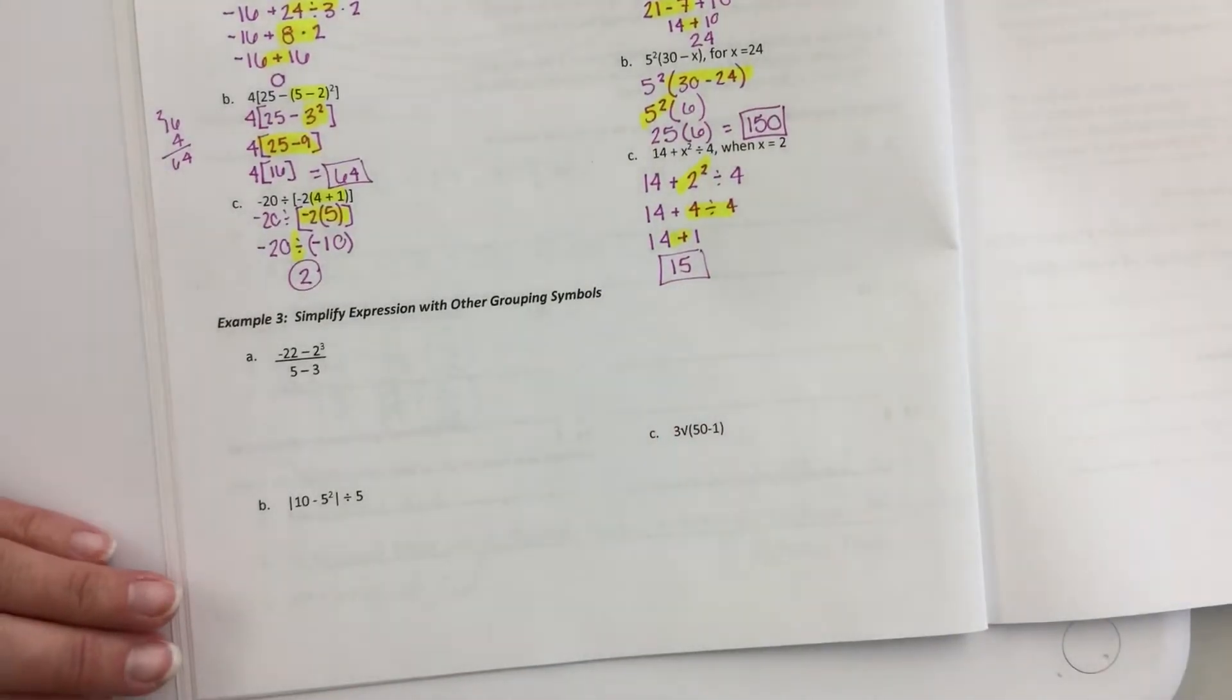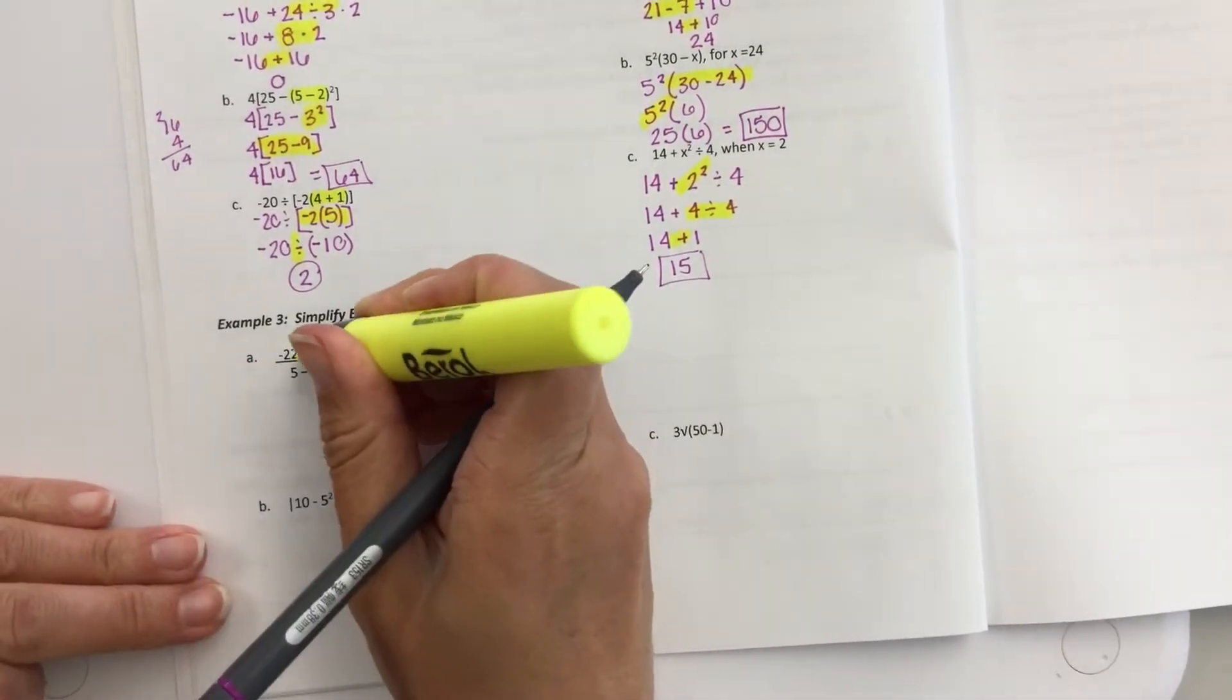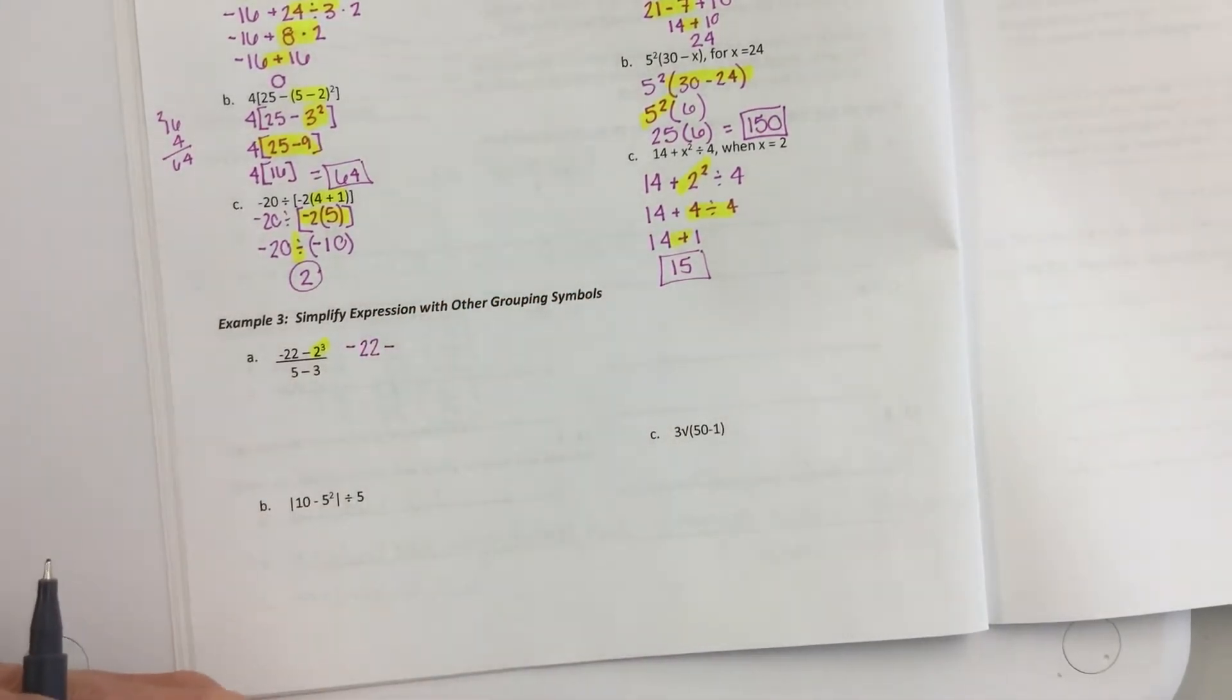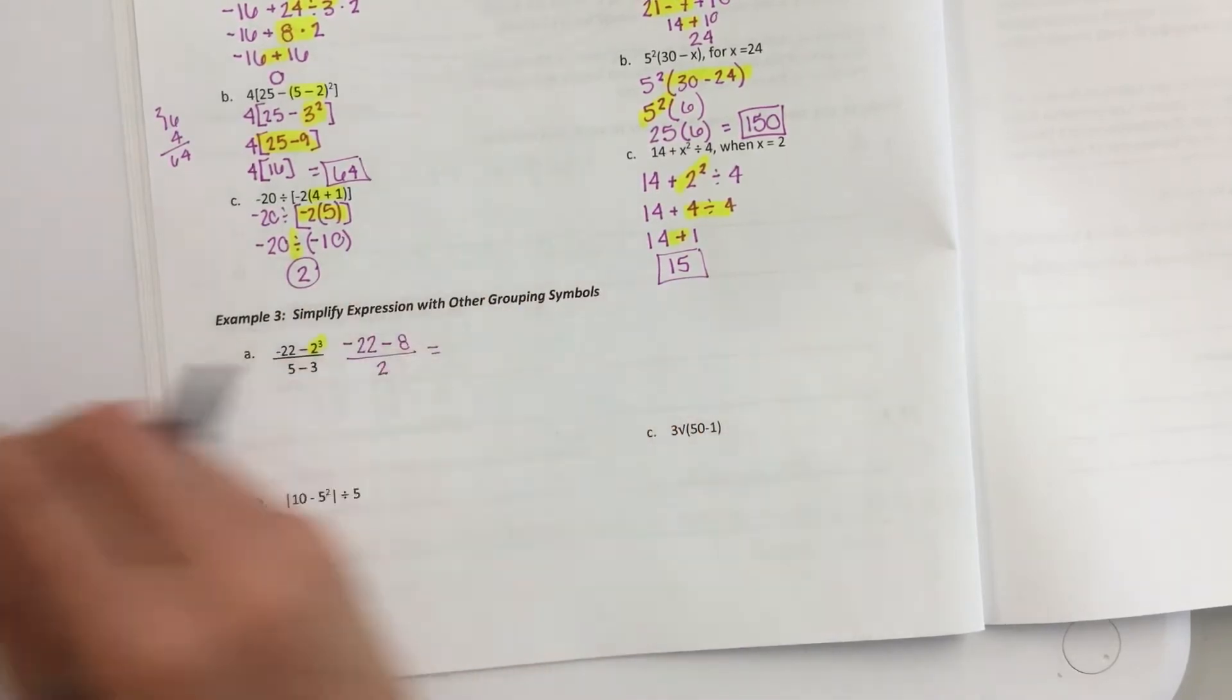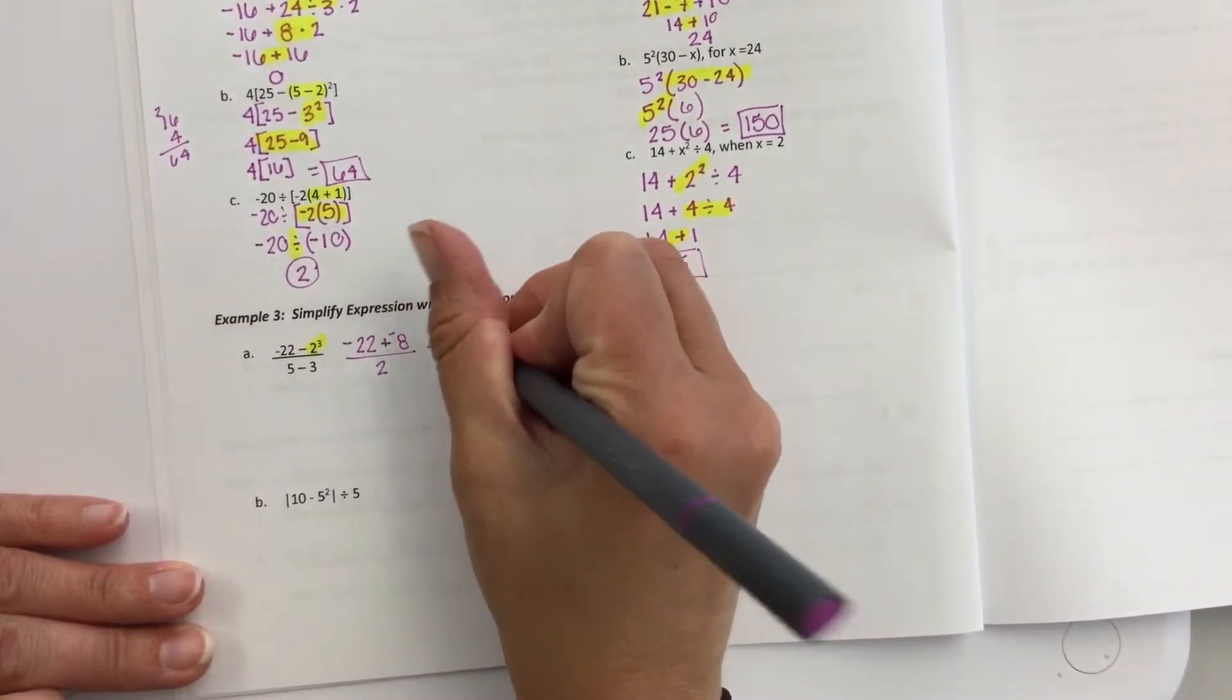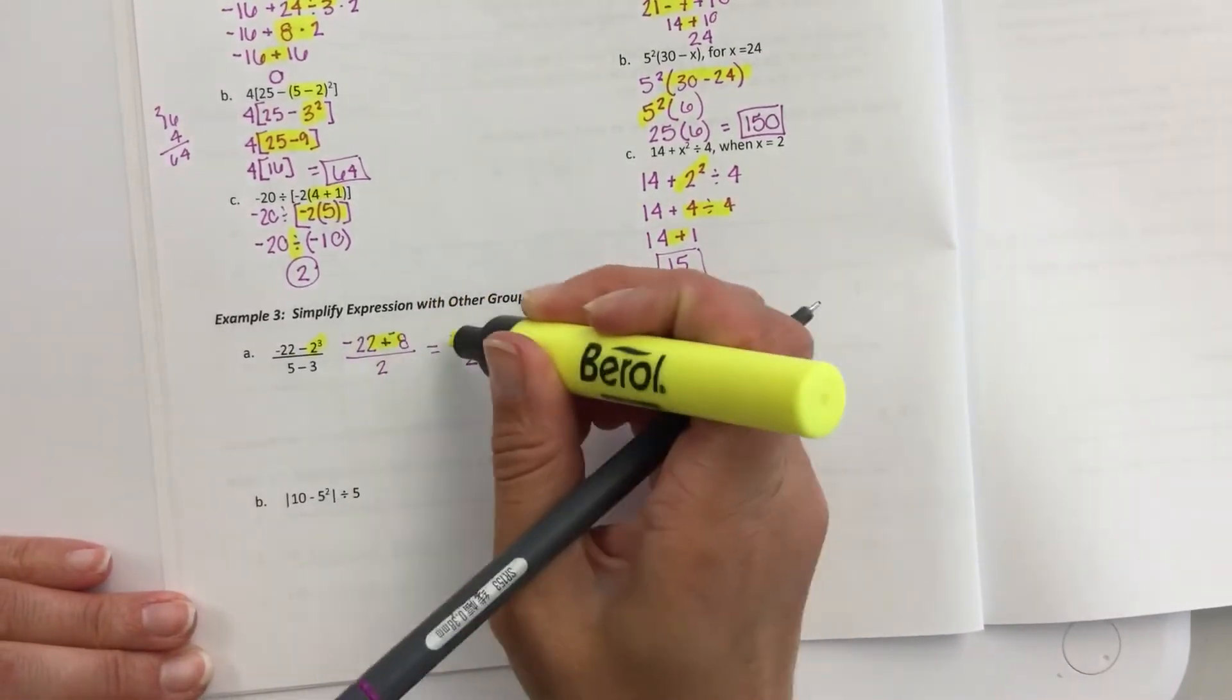Okay. Other grouping symbols that you guys might run into. For example, this is a division. But you do what's on the top and then what's on the bottom first. So for example, I would do the exponents first. So negative 22 minus 2 times 2 is 4 times 2 is 8. And then on the bottom, 5 minus 3 is 2. I still have to do this. So negative 22, remember add the opposite, gives me a negative 30. And that would end up with a negative 15. So you kind of work across the top and then work across the bottom. You do this and then division is your last one.